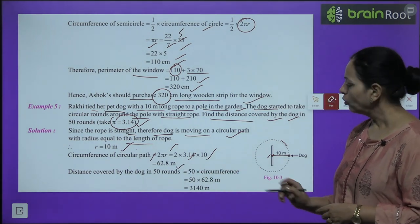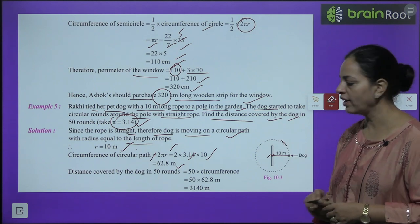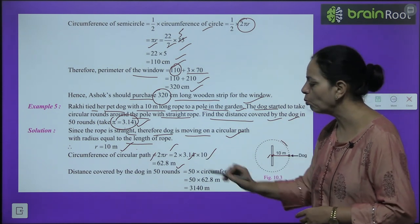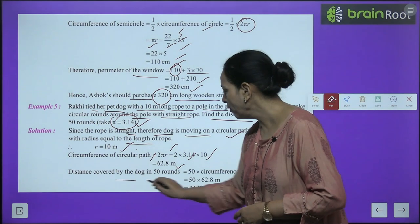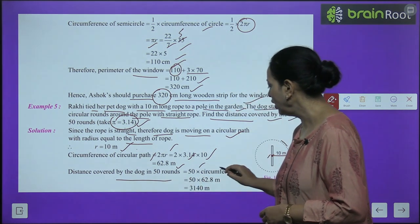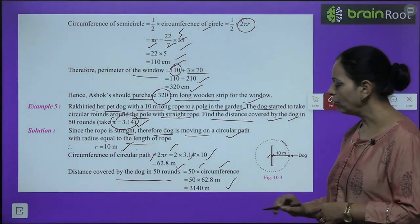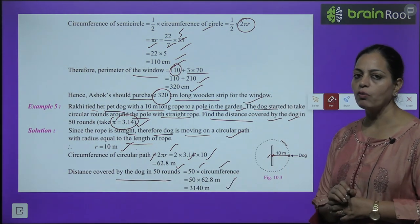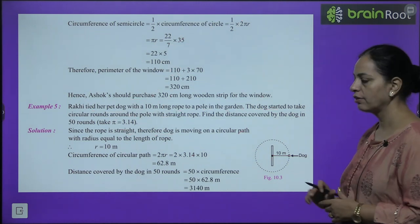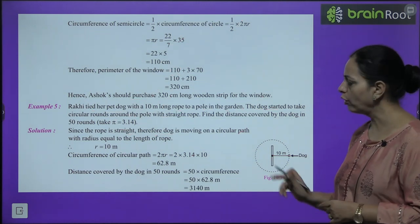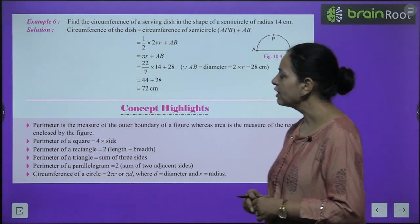So in one round the dog covers 62.8 meters, and in 50 rounds the dog covers 3140 meters.